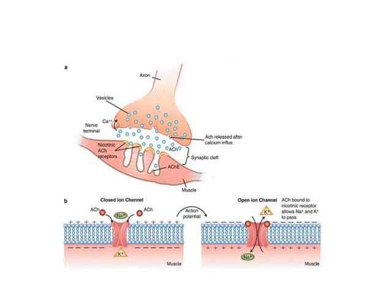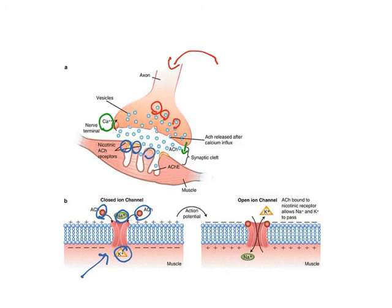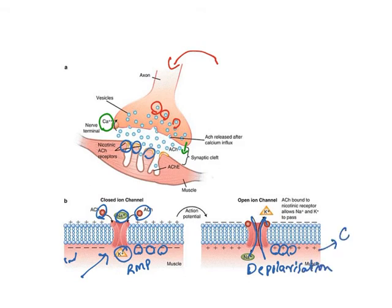At the axon terminal, acetylcholine is stored in vesicles. Once a trigger occurs, calcium entry releases acetylcholine. The released acetylcholine acts on nicotinic receptors. Once the nicotinic receptor is bound with acetylcholine, it activates a channel allowing sodium and potassium movement — sodium enters and potassium exits. The resting membrane potential is normally negative inside; sodium entry converts it to positive — this is depolarization. Depolarization enables muscle contraction. This is normal physiology; when drugs are used, this process is blocked.